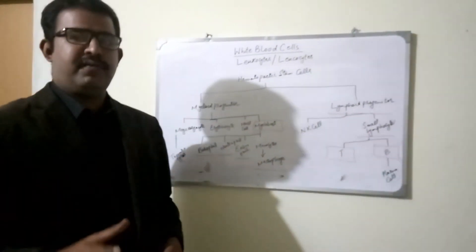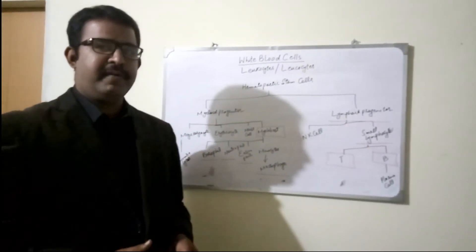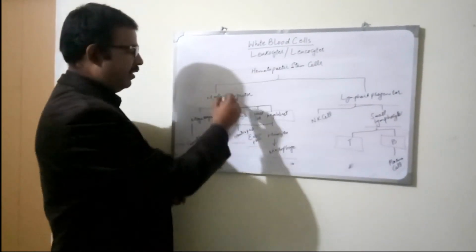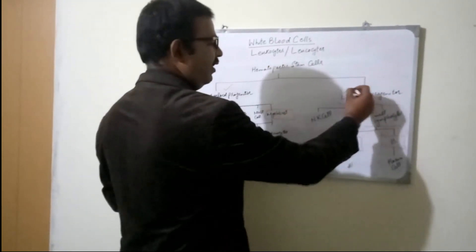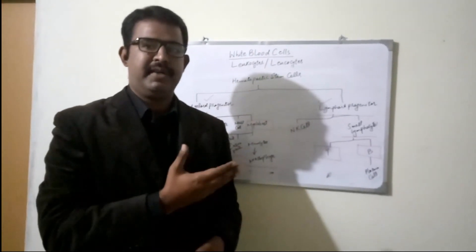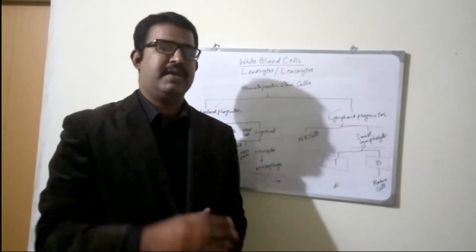So guys, it was the classification of white blood cells according to granulocytes and agranulocytes and by myeloid progenitor and lymphoid progenitor. Thank you, if you have any questions, please click the bell button and please subscribe my channel.